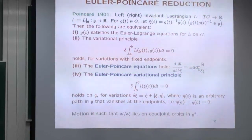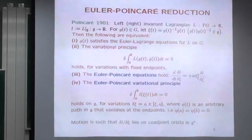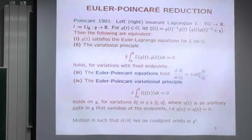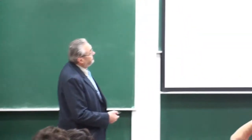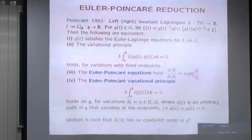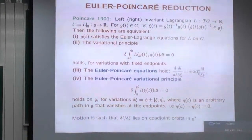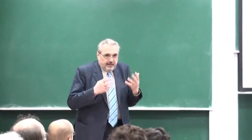Why are one and two equivalent to three and four? Even here it's almost obvious. If L is left-invariant, for example, I multiply by g⁻¹ and write g⁻¹ġ = ξ, so the integrand is the same. The content of the theorem is that this is not a standard variational principle — it's a constrained variational principle. Poincaré's paper is a page and a half, and everything is proved.